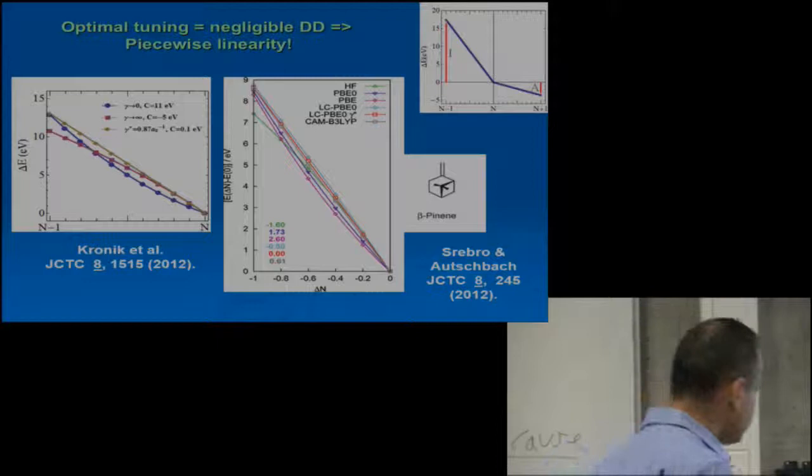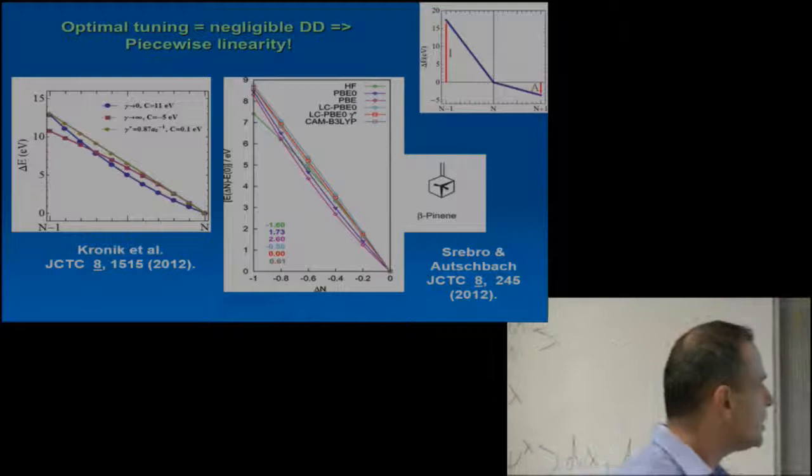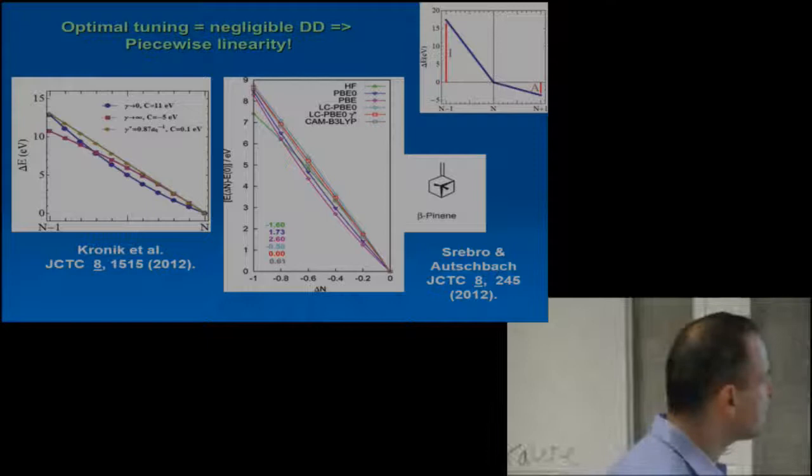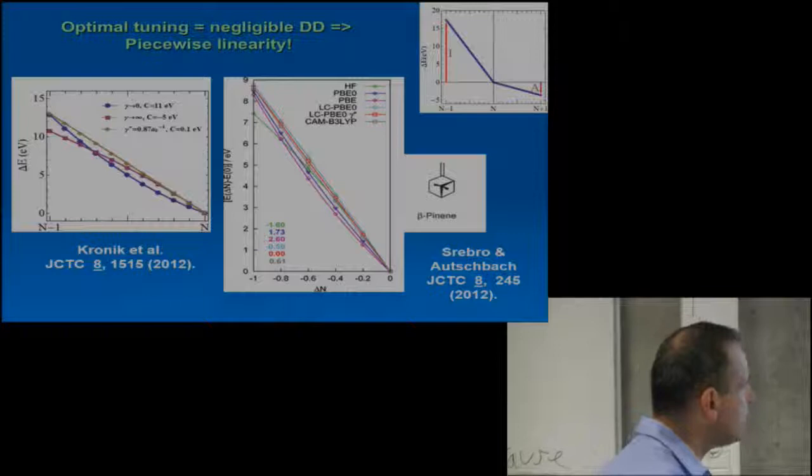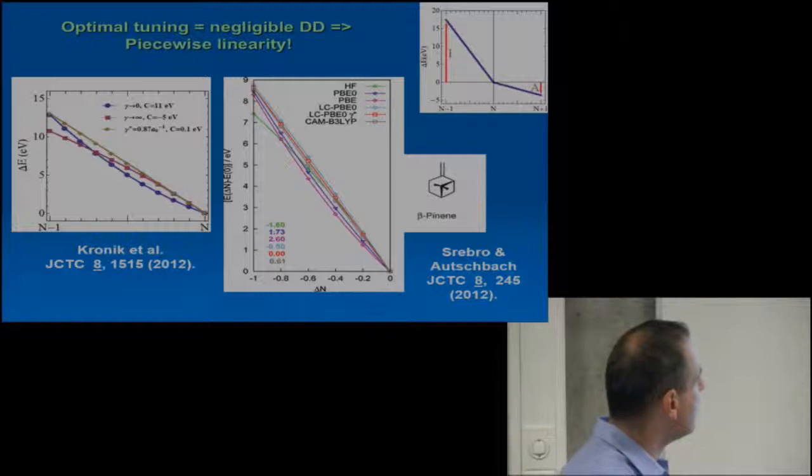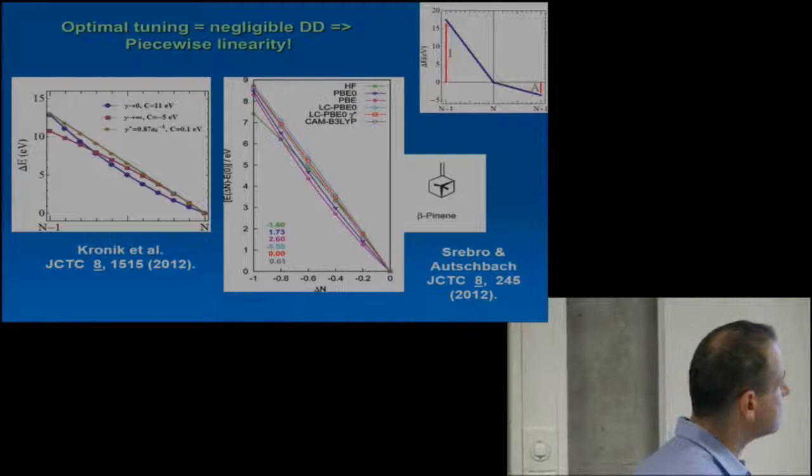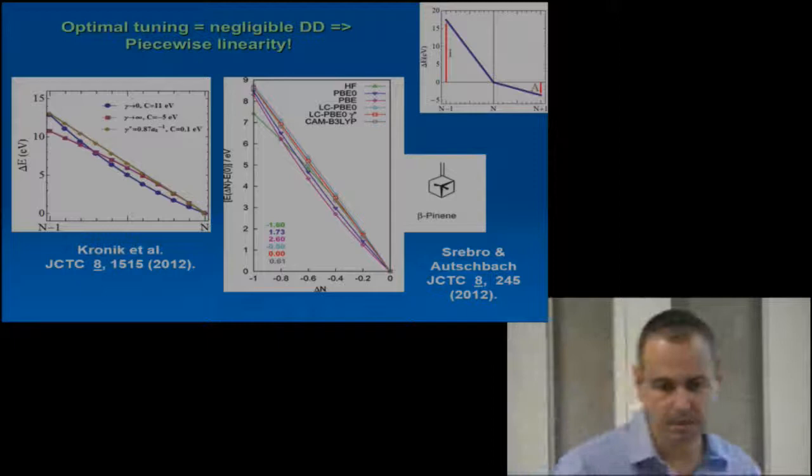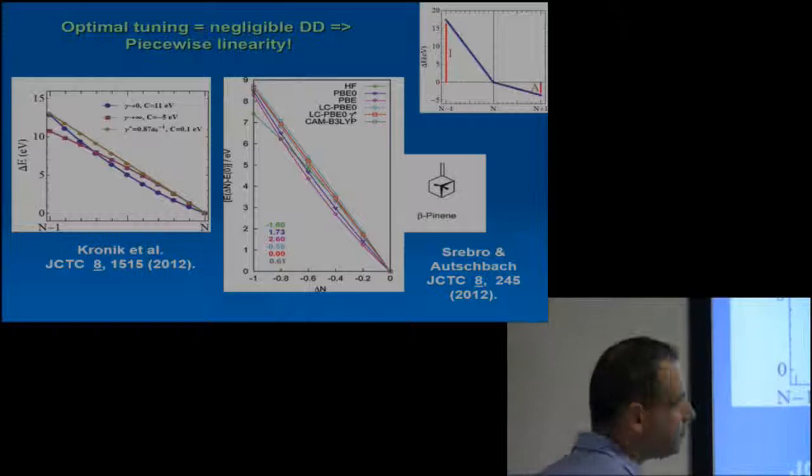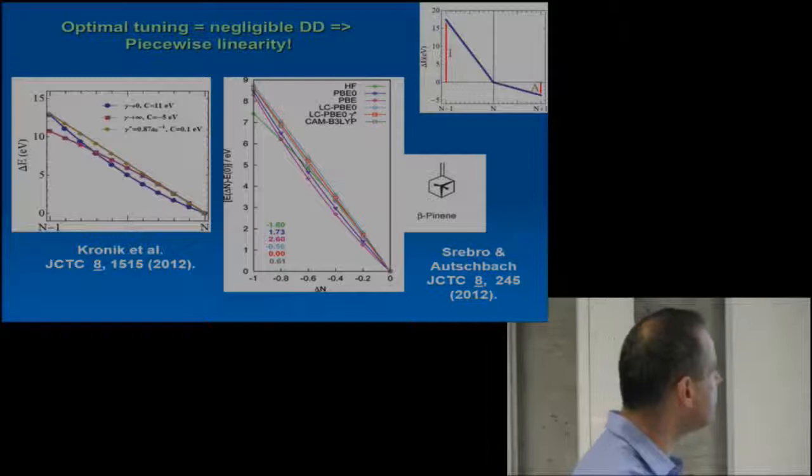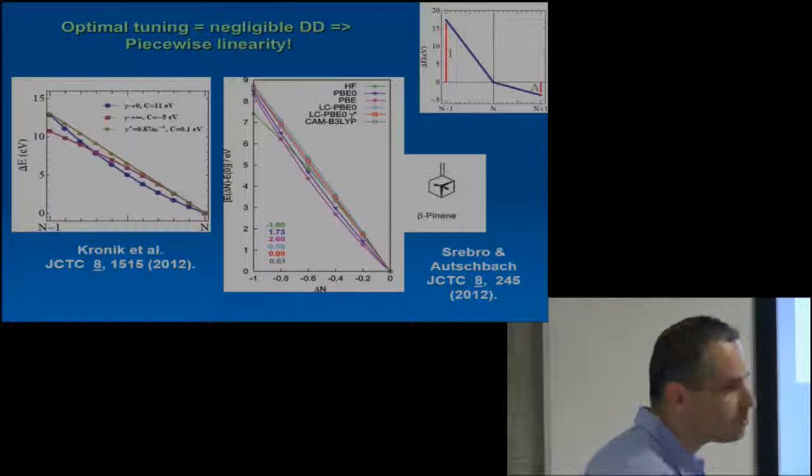Now that I hopefully convinced you that that kind of works, let's dig a little bit deeper into what makes it work. So one thing that we noticed, and for fairness, the Autschbach group noticed about the same thing at about the same time. This is the H2O molecule, and I'm plotting this piecewise linearity curve. In the ideal functional, I should have basically a linear curve between the N minus one particle situation and the N particle situation. When gamma goes to zero, which is basically the GGA limit, I have the usual convexity. When gamma goes to infinity, which is basically Hartree-Fock plus semi-local correlation, I have the usual concavity of Hartree-Fock. But when I optimize the range separation parameter, in fact, the curvature vanishes almost entirely to within 0.1 eV.